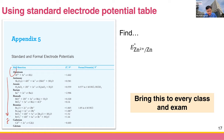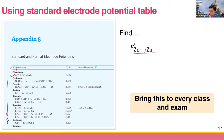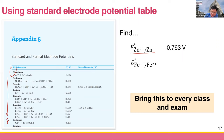Let's practice using the table. What is the standard electrode potential of the zinc-two-plus/zinc half-cell? Zinc starts with Z, so it should be near the end of the table. The answer is minus 0.763 volt. Great job.